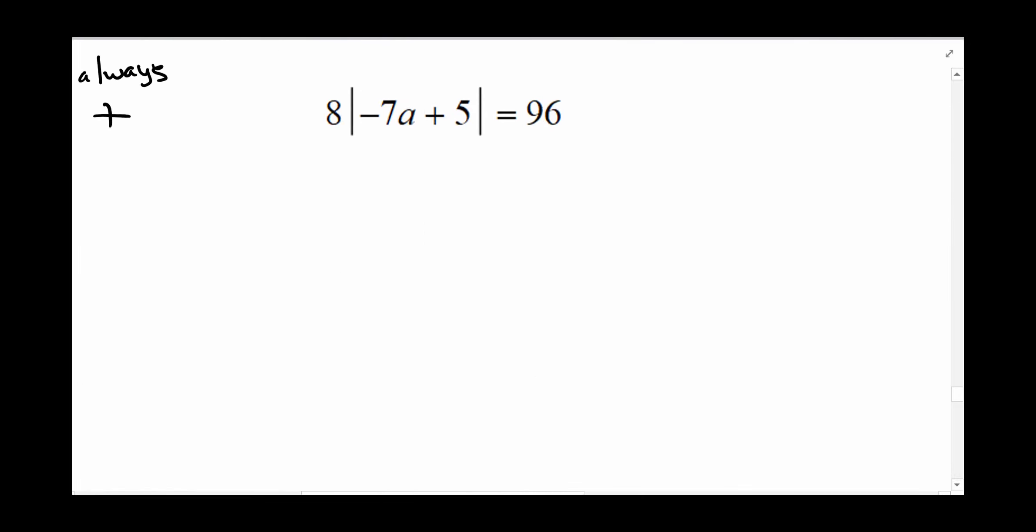So here's one that we're going to experiment with. Remember, the first step I said, you're going to isolate the absolute value. So we're going to divide both sides by 8 and that leaves us with all of this is equal to 12.